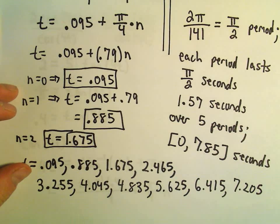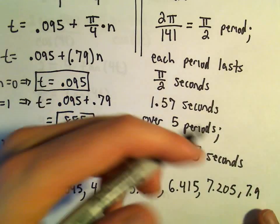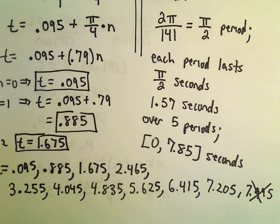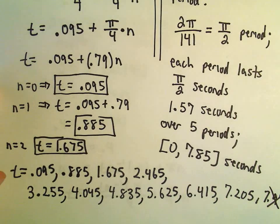And now if we add 0.79, we get 7.995. But that's outside of our interval, so that one doesn't work. So these are going to be all of our t values here that do work.